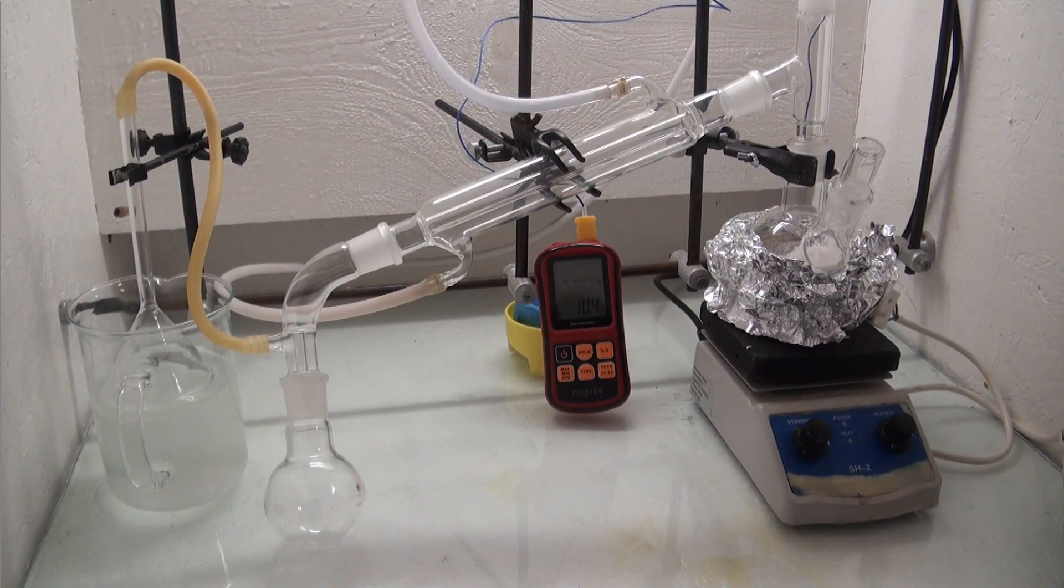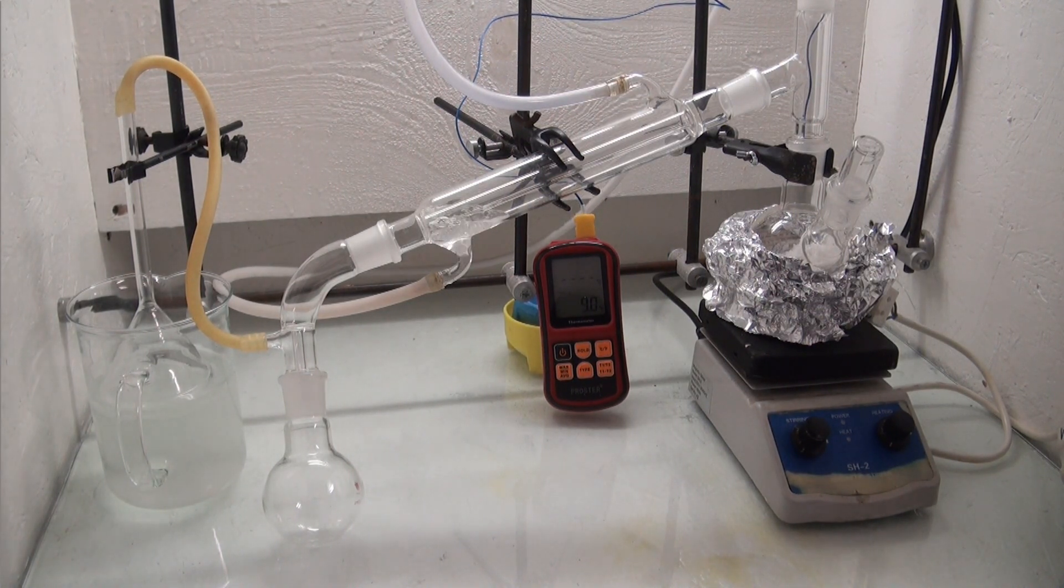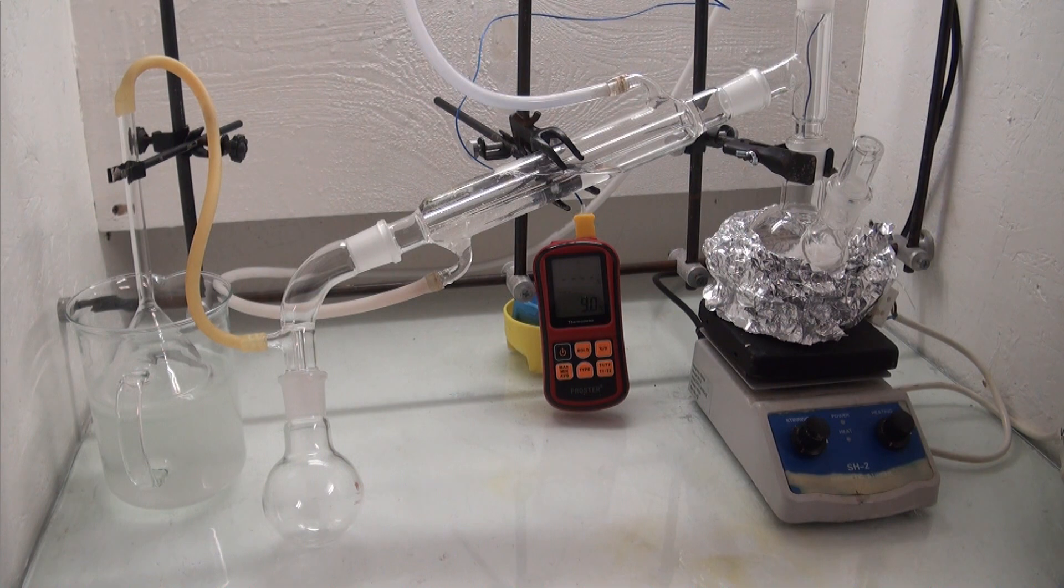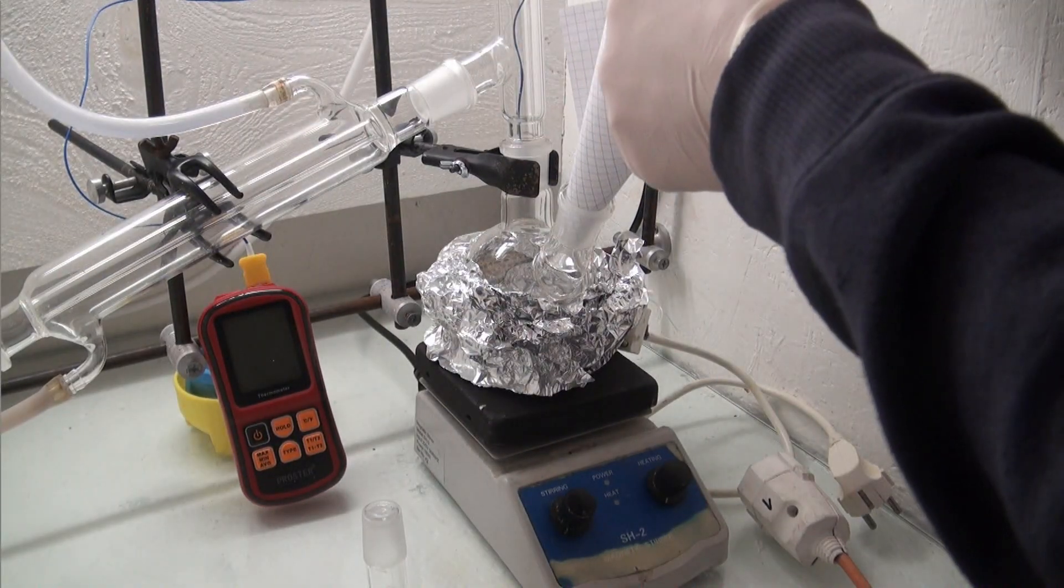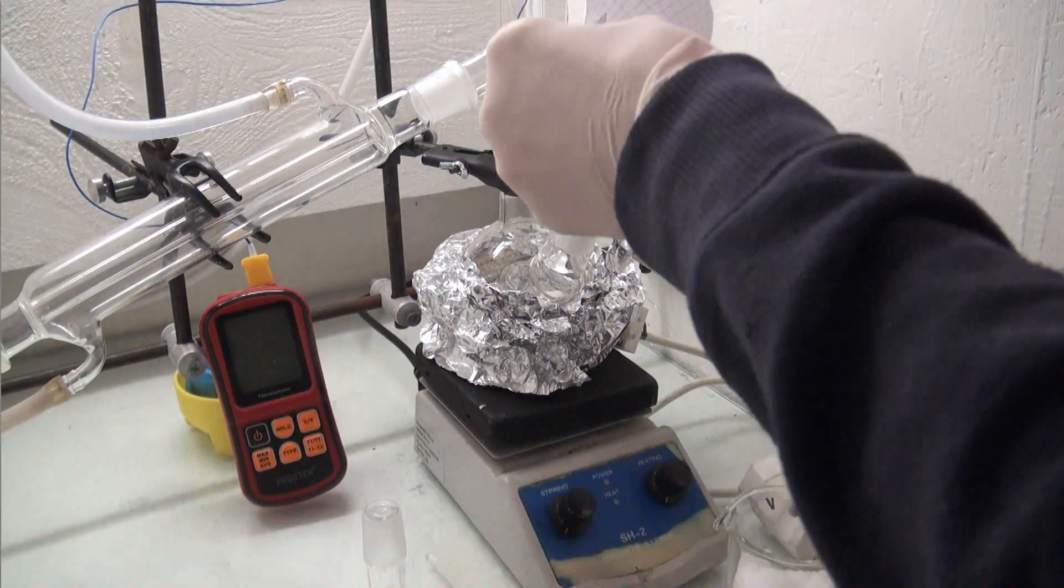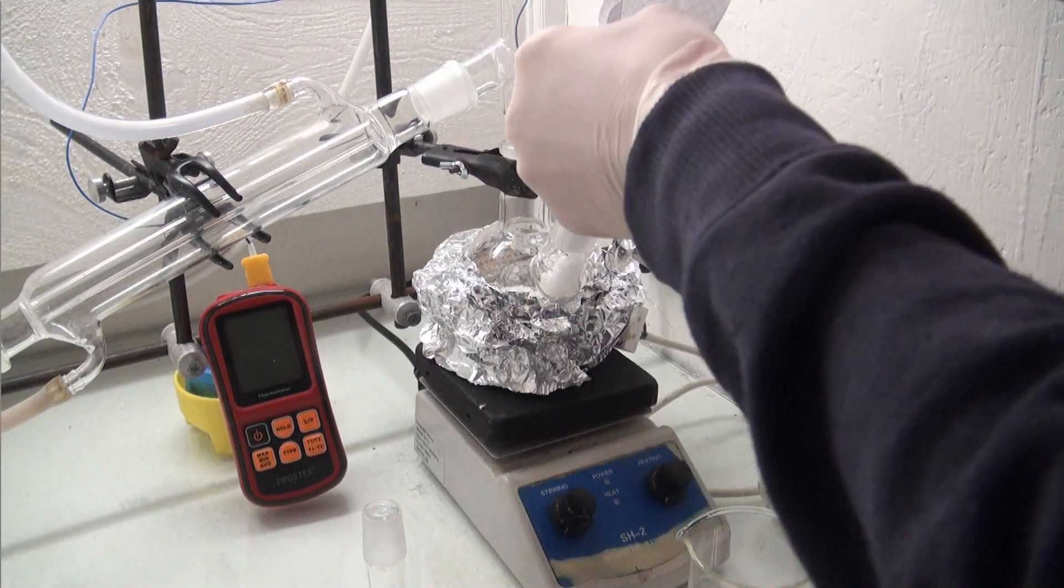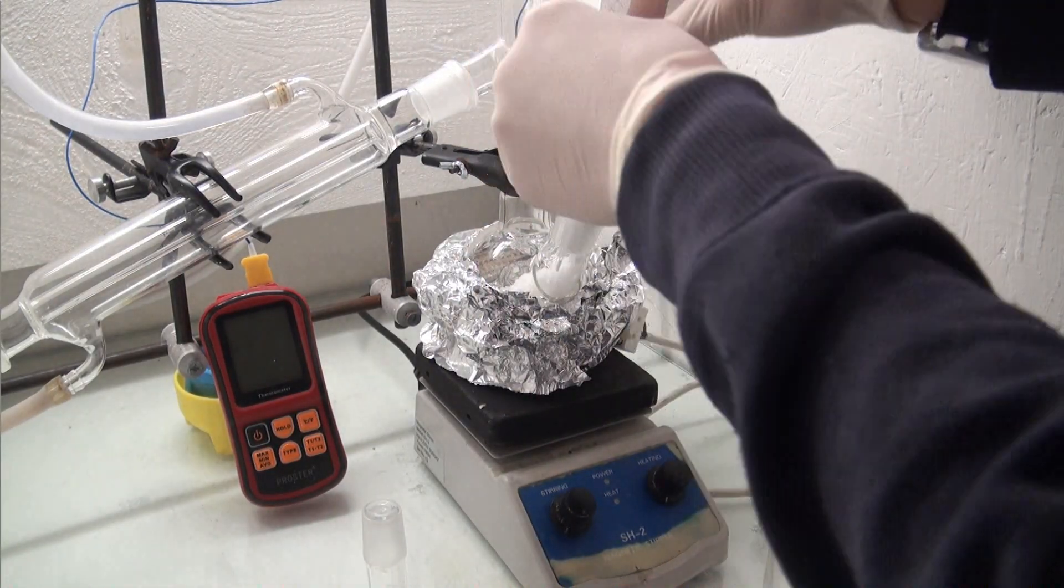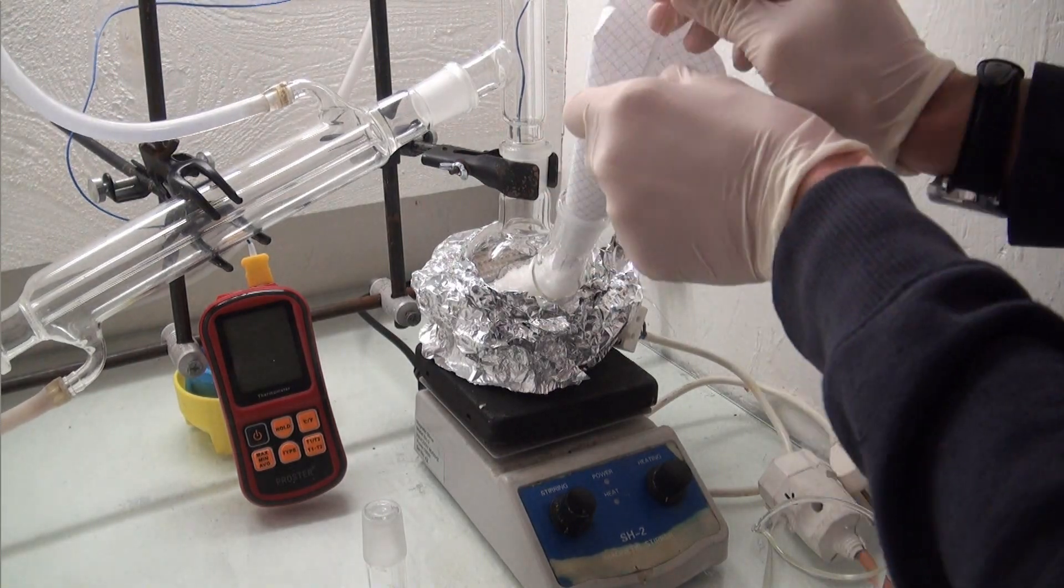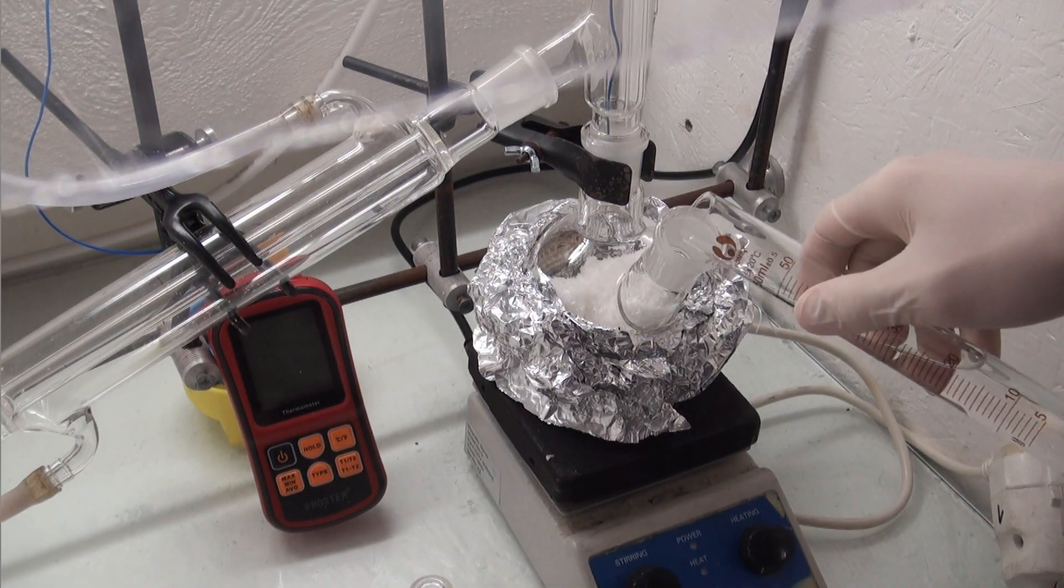I started this experiment with a simple distillation setup connected to a gas trap containing a sodium hydroxide solution against nitric acid vapors and nitrogen dioxide gas. One mole of potassium nitrate was added into the flask. To this, 0.4 moles of phosphoric acid was added.